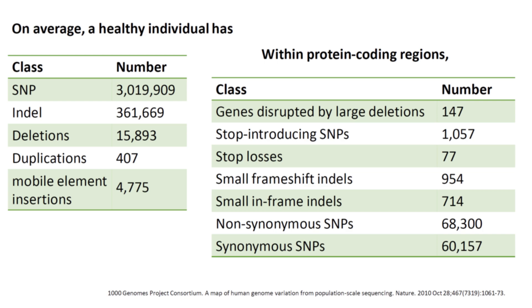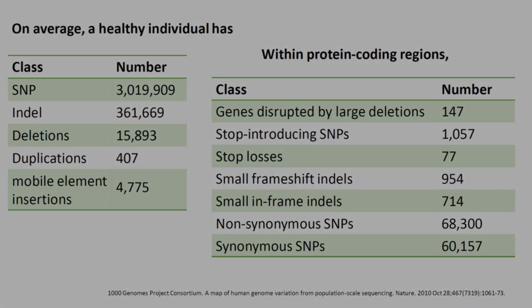So the questions are: what features differentiate disease-causing variants from neutral ones, and how can we predict whether a variation is disease-causing? Unlike sequence alignment and sequence database search, these questions remain largely unsolved, and there is still lots of active research going on.